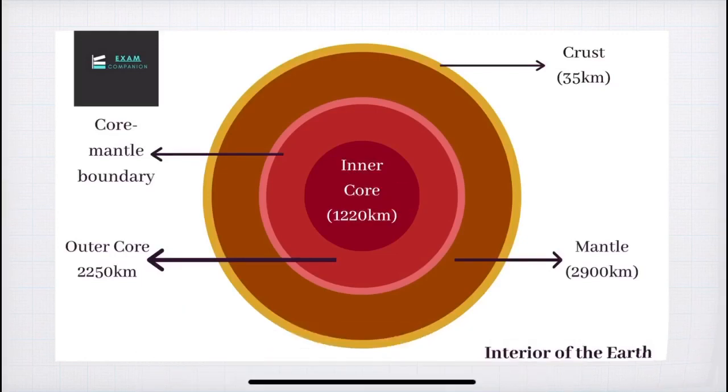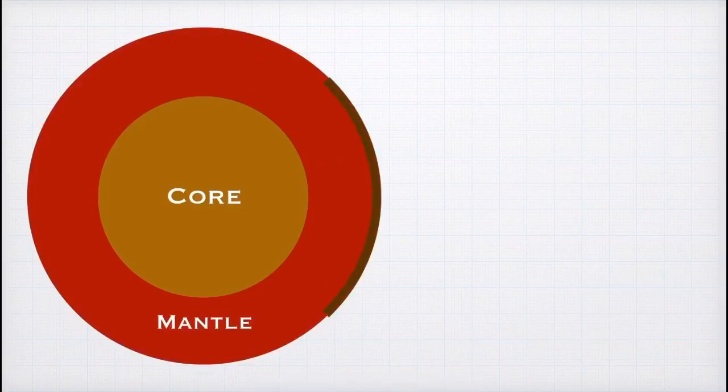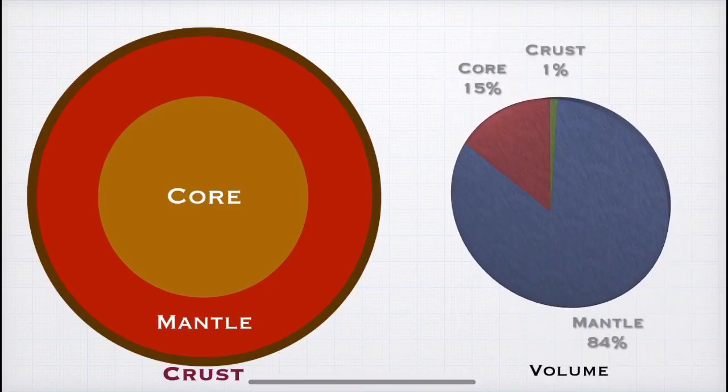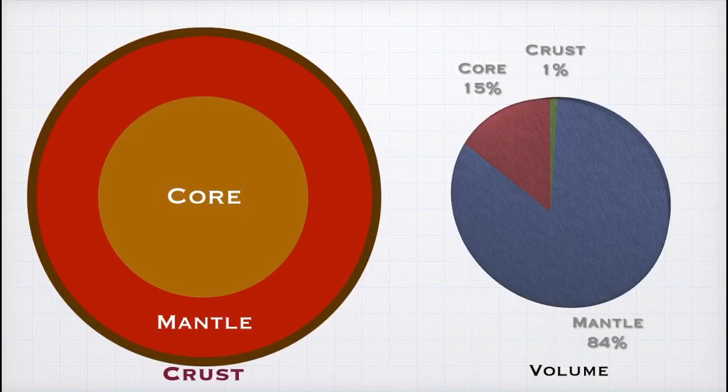Now students, moving forward, if the question comes in exam asking about the three layers of earth, then you have to mention core, mantle and crust because the core-mantle boundary separates the core and the mantle, it is not a layer. And inner core and the outer core are two sub layers of the core itself. Now just to give you an idea, this diagram shows that mantle constitutes about 84% of the earth's volume, core constitutes 15% and crust constitutes just 1%. Students, the diagram depicting the layers of the earth is very important. So please keep it in mind.